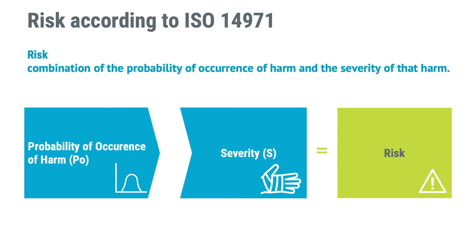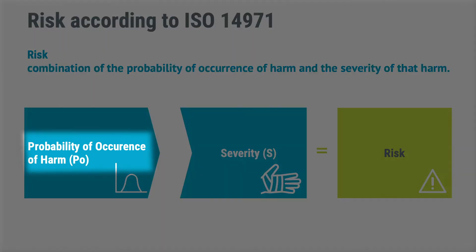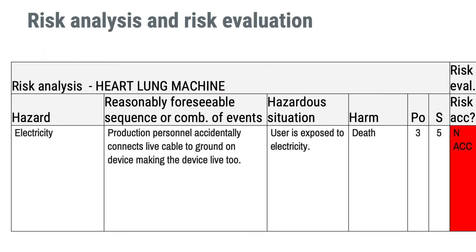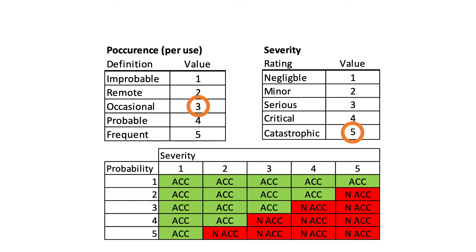In ISO 14971, risk is defined as the combination of probability of occurrence of harm and the severity of that harm — often abbreviated as PO and S. When estimating the probability of occurrence of harm, you should think of your product as if you haven't implemented any risk control measures at all, meaning that the probability is fairly high — on a scale from one to five we set it to three. The severity is based on the harm, which in this case was death, so we assign the highest severity: five on a one-to-five scale.